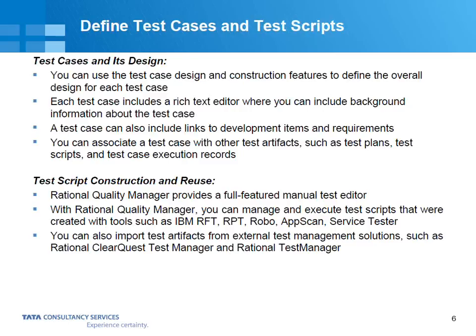A test script can be either a manual test script or an automation test script. Manual test script means you have a set of instructions and you go to the screen and manually execute it. Automation means you have automation scripts — for example, a functional regression testing tool like IBM RFT (Rational Functional Tester) or another vendor's tool like HP QTP, which is also a functional regression tool.